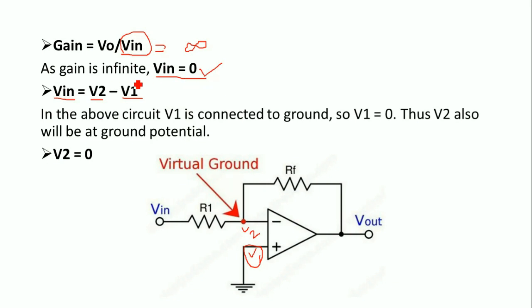Since V1 equals zero and Vin also equals zero, automatically V2 also becomes zero. At this node point the voltage V2 equals zero — it is not actually connected to the ground, but the voltage at node V2 is zero. This is what we call virtual ground: it is not a real ground, not physically connected to ground, but the voltage at that node equals zero.